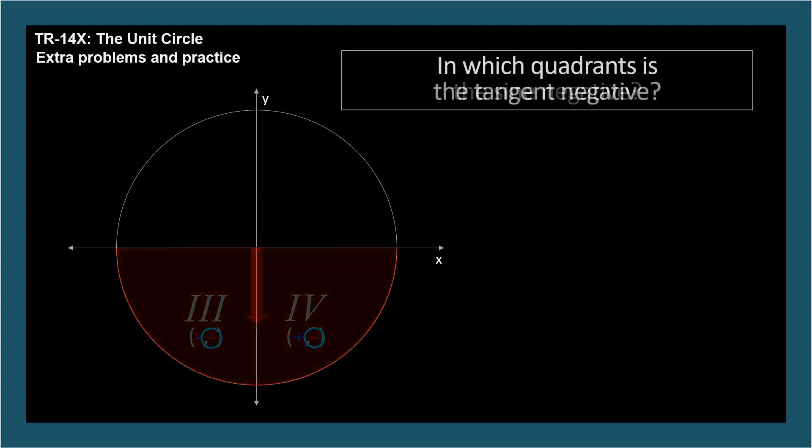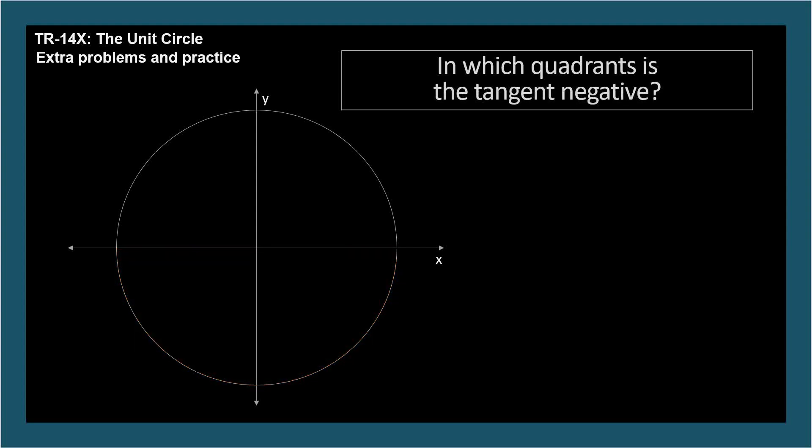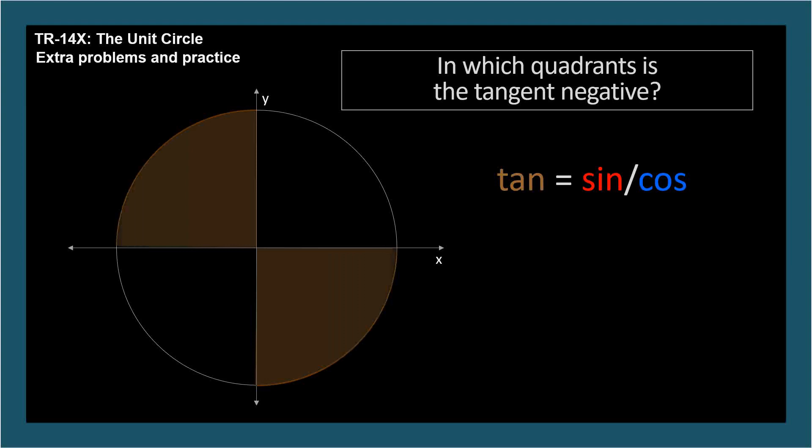Here's one that's tricky the first time you encounter it. In which quadrants is the tangent negative? Tangent is sine over cosine, so it's negative when the sine and cosine have opposite signs. So quadrant 2, where the cosine is negative and the sine is positive, and quadrant 4, where the cosine is positive and the sine is negative.